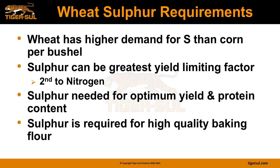Wheat has a high demand for sulfur, and comparing that to corn, it can be even higher than corn on a per bushel basis. Sulfur can be a high yield-limiting factor, sometimes second only to nitrogen. Sulfur is needed for optimum yield as well as protein content in the wheat, and it's that protein content that influences high-quality baking flour.